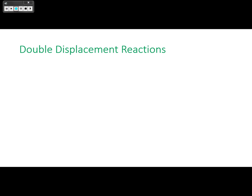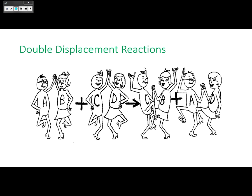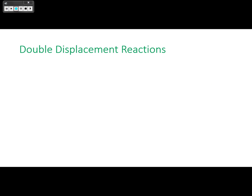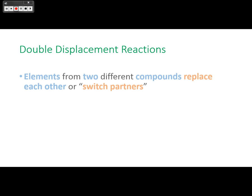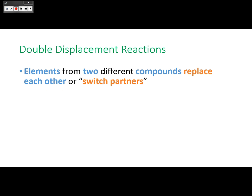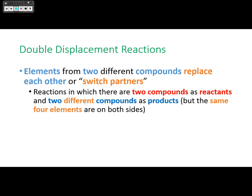Double displacement reactions are where elements from two different compounds replace each other or switch partners. These reactions have two compounds as reactants and two different compounds as products, but the same four elements appear on both sides: AX + BY → AY + BX.